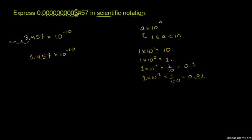In general, what you want to do is find the first non-zero number. Remember, you want a number that's between 1 and 10, and it can equal 1, but it has to be less than 10. 3.457 definitely fits that bill. Then you count the leading zeros between the decimal and that number, and include the number itself, because that tells you how many times you have to shift the decimal over. So we have to shift this decimal 10 times to the left to get this number.